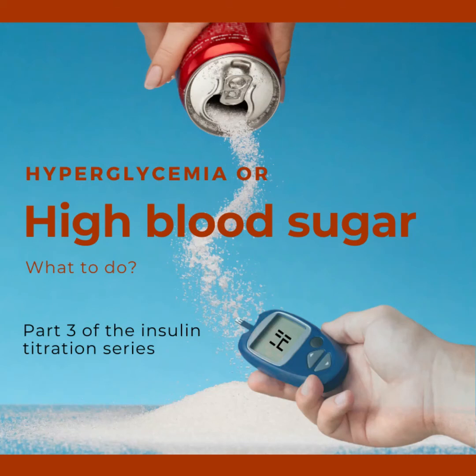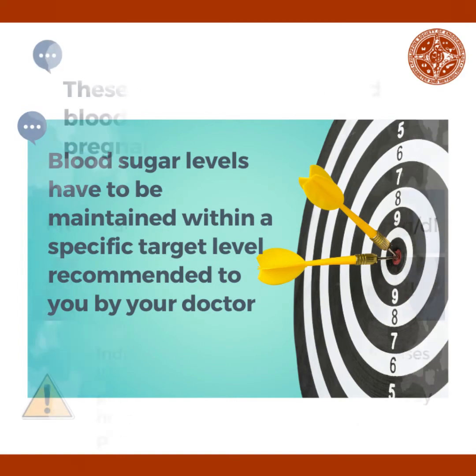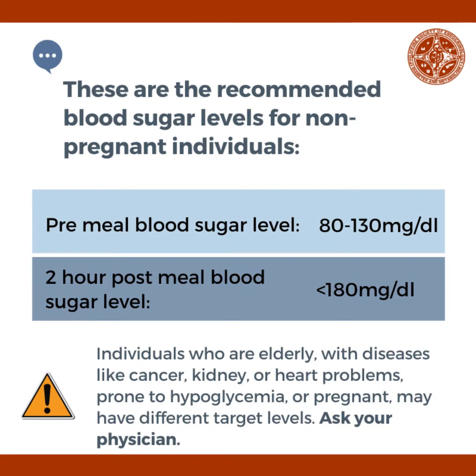What should you do when you have hyperglycemia or high blood sugar? This is part 3 of the insulin titration series. Blood sugar levels have to be maintained within a specific target level recommended to you by your doctor.